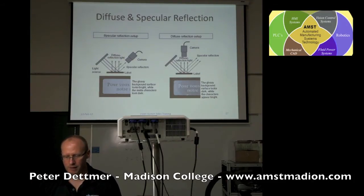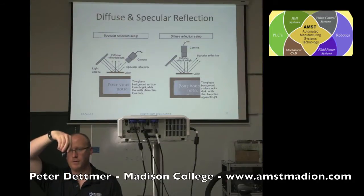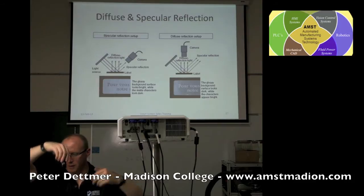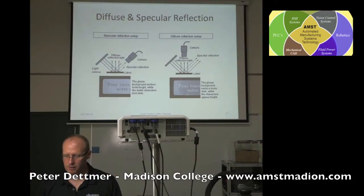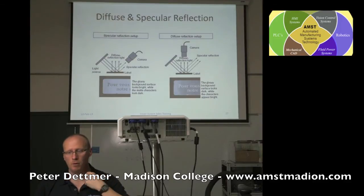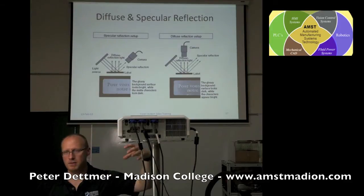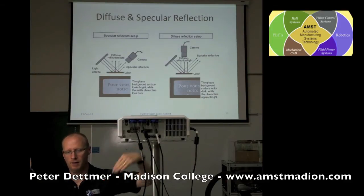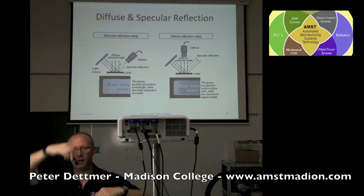If we use diffuse lighting, which is simply moving the camera up over the top while still lighting from an angle, the glossy background looks darker and the characters appear bright. That is the same part, same component — the lighting comes from the same angle, but the camera was moved from receiving it at the right angle to straight above.